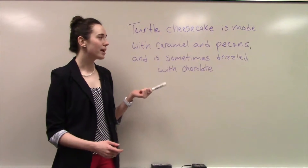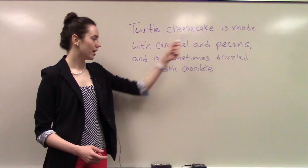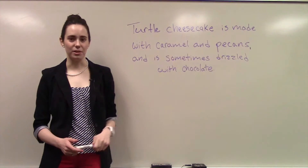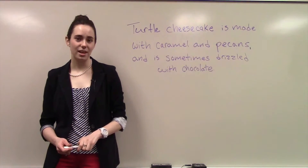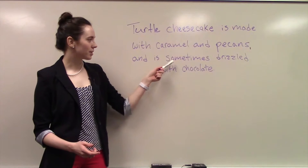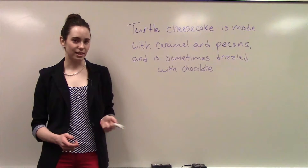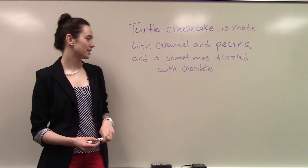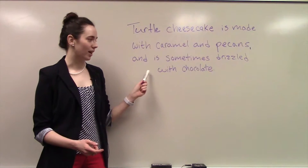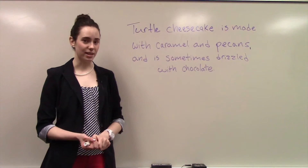It may appear that this sentence needs a comma and conjunction to connect two independent clauses, but in reality, is sometimes drizzled with chocolate is not an independent clause. It has a predicate, but it lacks a subject. Therefore, it is a dependent clause.